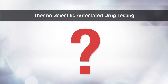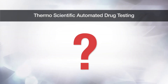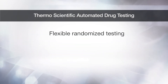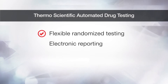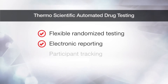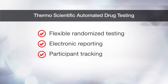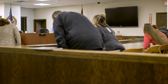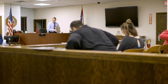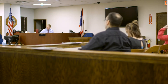So what is a complete automated drug testing process? It's a process that integrates flexible, randomized testing with electronic reporting and participant tracking. The ultimate goal is to make drug court programs more successful for participants.